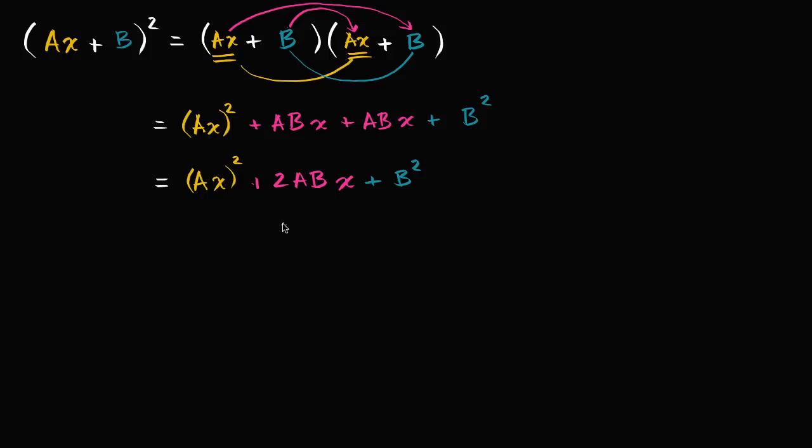Now I said I could write it in a slightly different way. What I could do is just rewrite Ax squared as being the same thing. This is the same thing as A squared x squared. And then I can write out everything else the same way, plus 2ABx and then plus B squared.